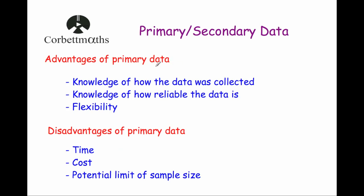The advantages of using primary data: first, there is the knowledge of how the data was collected. Going back to the ruler experiment, we might know that the ruler needs to be held level with the fingers and then released. If it was a survey, we might know how the questions were designed so that they're not leading questions. That knowledge of how the data was collected is an advantage of primary data.